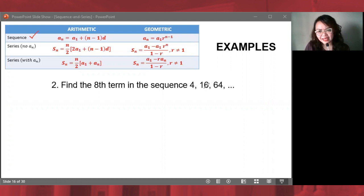So, ano kayang nangyayari dito? Paano naging 16 ng 4 at paano naging 64 ng 16? Wonderful! We see that we are multiplying these by 4. So, we are multiplying by 4.